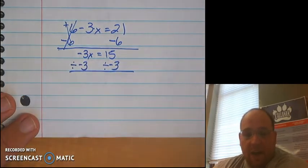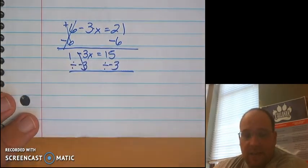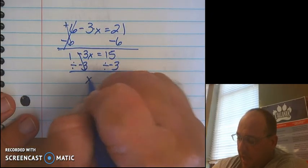When I take a negative 3 divided by a negative 3, I get a positive 1. And 1 times x, we know identity property tells me x.